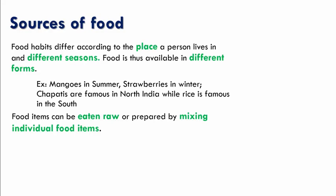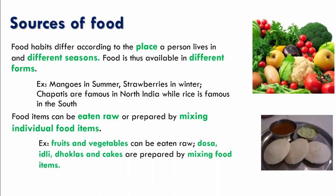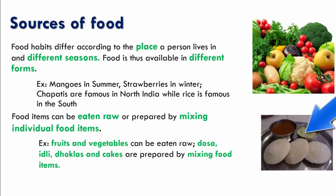Can you name a few food items that can be eaten raw? Fruits and vegetables can be eaten raw, whereas food items such as idli, dosa, dhokla and cakes are prepared by mixing food items.